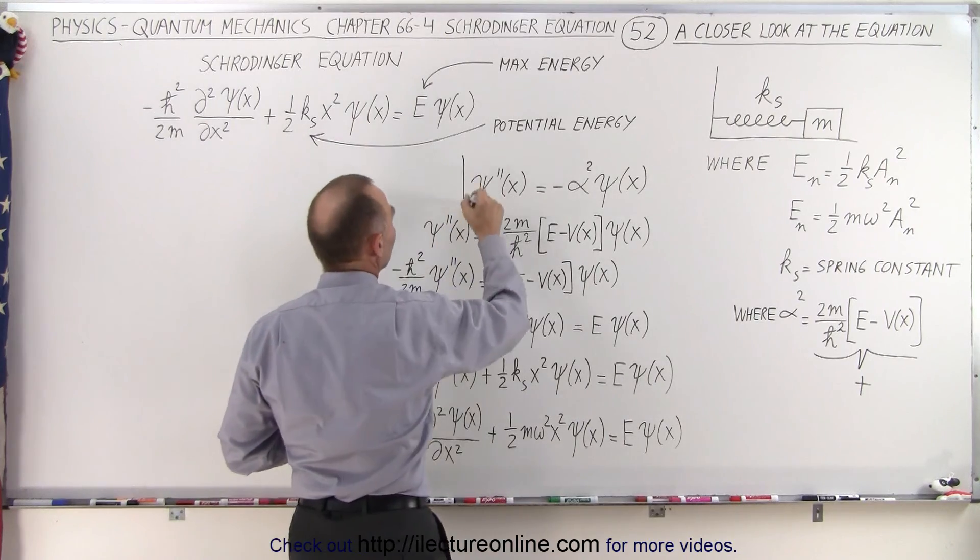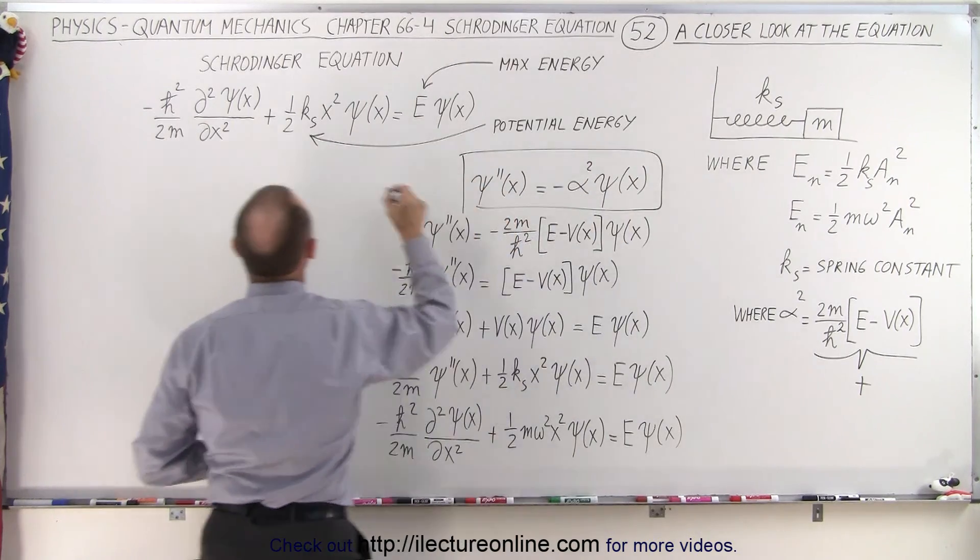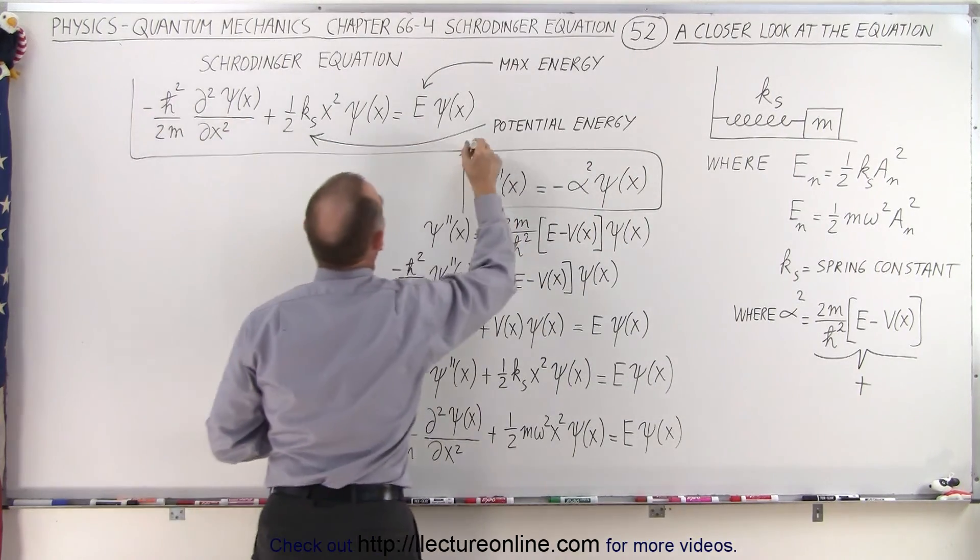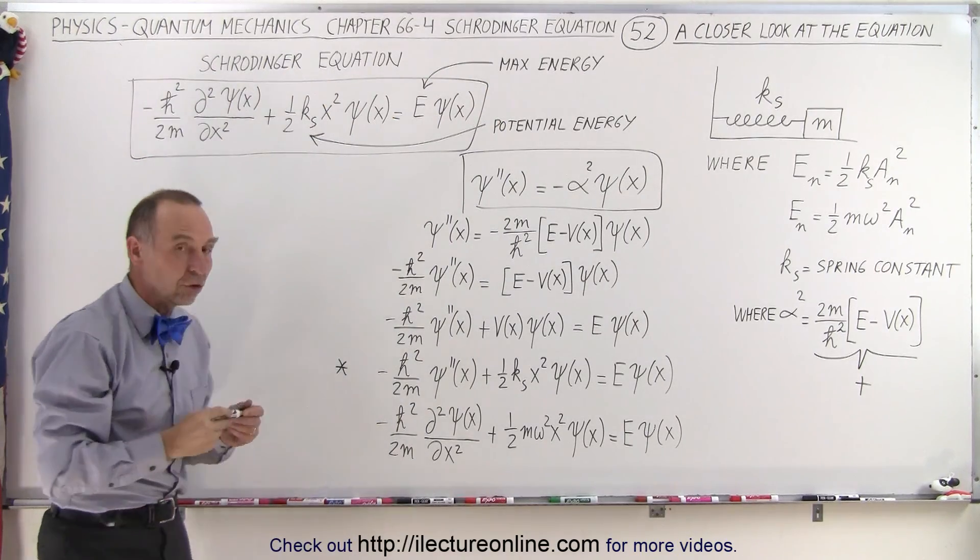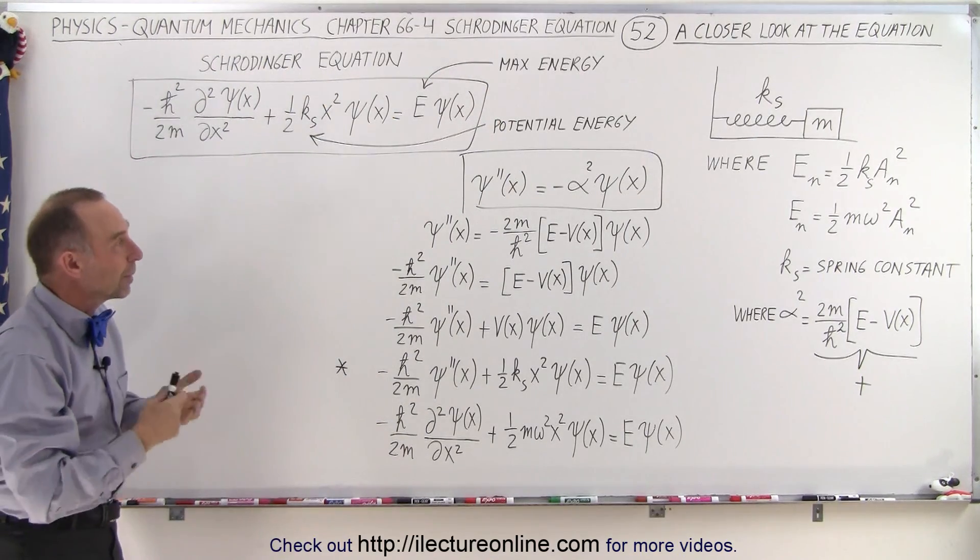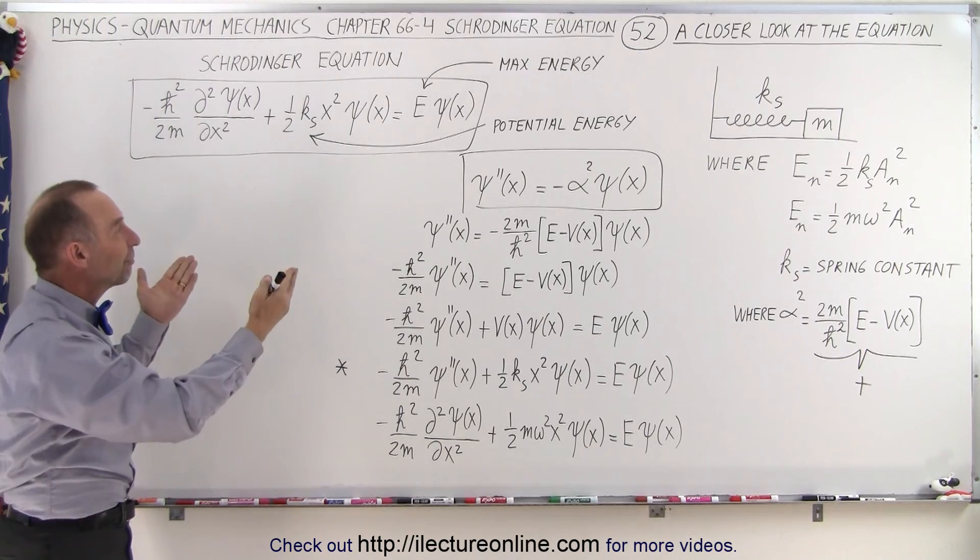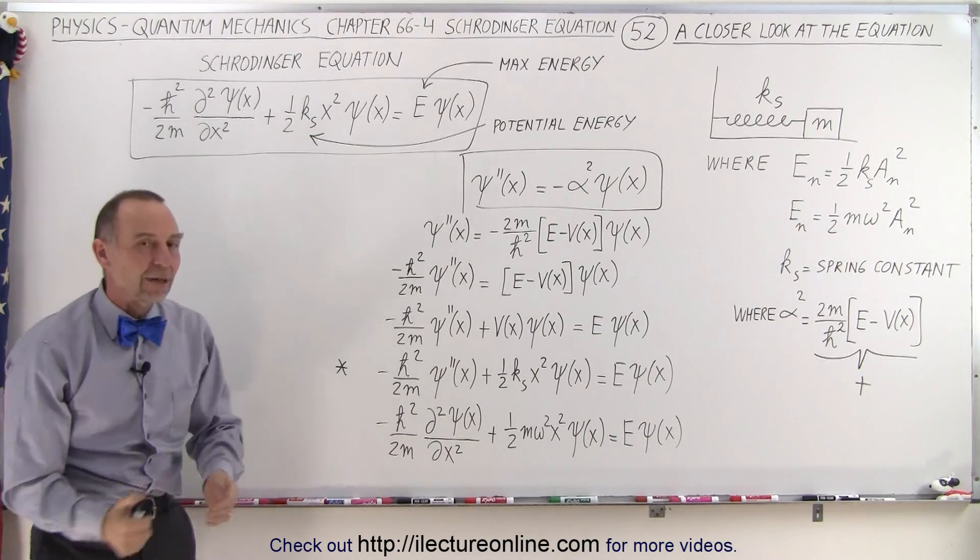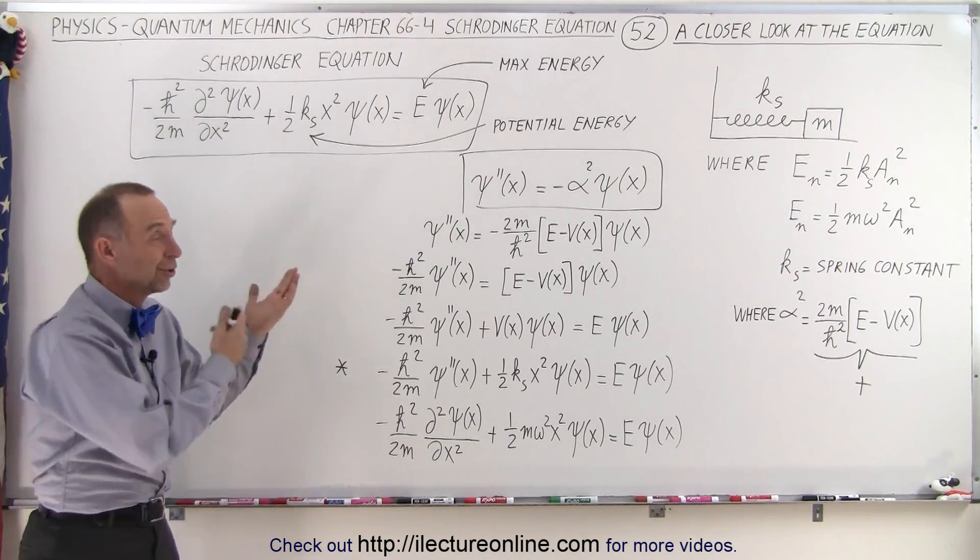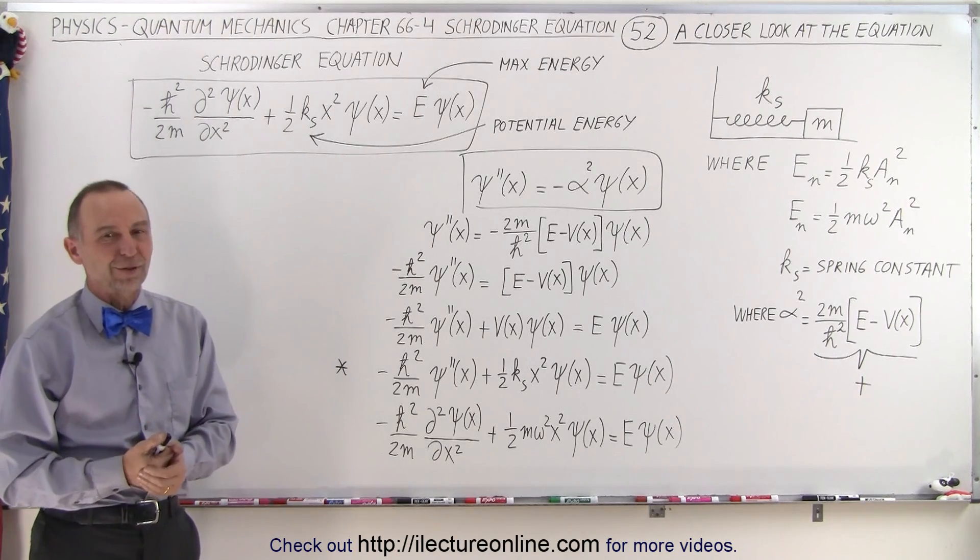But notice if you see something that looks like this versus something that looks like this, we're actually dealing with the very same equation—the Schrödinger equation of the quantum harmonic oscillator. They look very different but they actually mean exactly the same thing. So now at least you don't need to be confused about these different forms of the same equation.